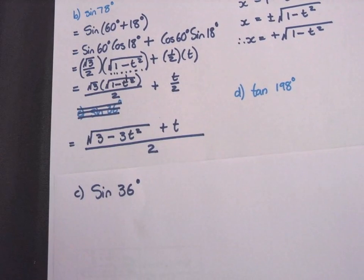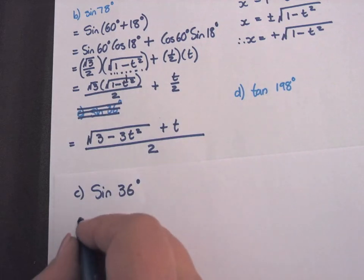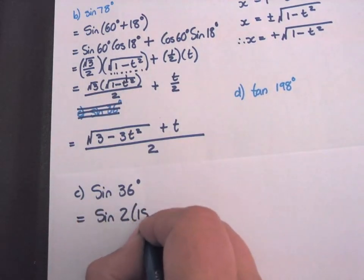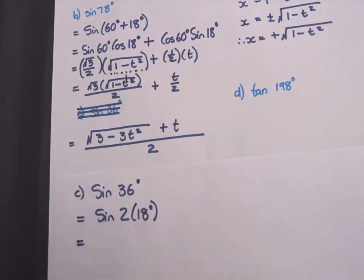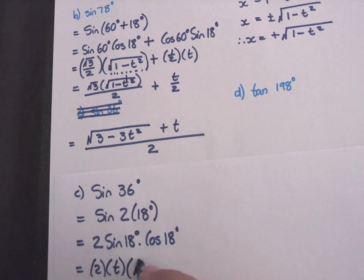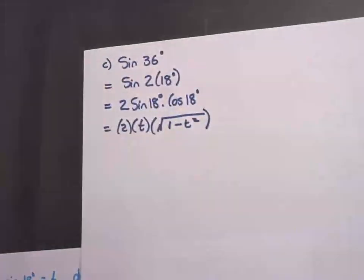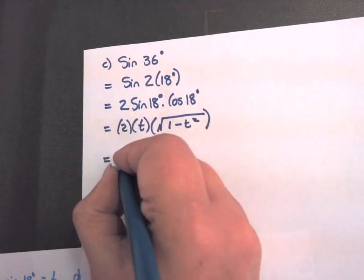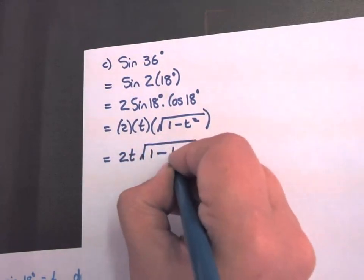Sine 36. I have a triangle with 18 degrees. How can I transform the 36 to include an 18 degrees? Double angle. This will be sine 2 times 18 degrees. And the formula for a double sine will be 2 sine 18 cos 18. It will be 2 times sine 18, which they gave us as T. Cos 18 we worked out in number A, so it's square root of 1 minus T squared. Now you just multiply everything. It's 2T square root 1 minus T squared.